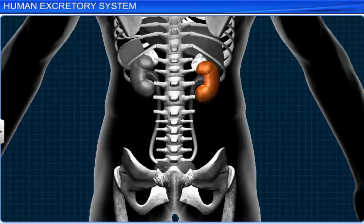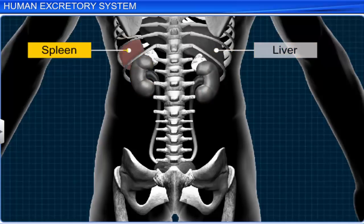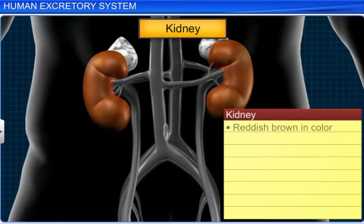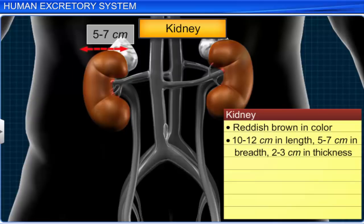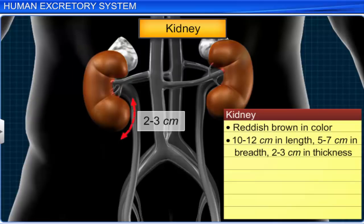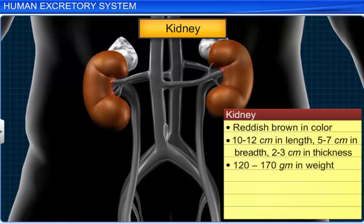The right kidney, which is near the liver, is slightly lower than the left one, which is adjacent to the spleen. The kidneys are reddish brown in color. In an adult, each kidney measures about 10 to 12 cm in length, 5 to 7 cm in breadth, and 2 to 3 cm in thickness. Each kidney weighs about 120 to 170 grams.